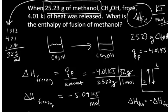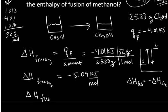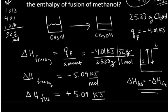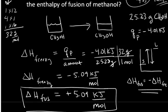I want the change in enthalpy of fusion, and that's just the opposite. So that's going to be negative times negative is positive 5.09 kilojoules per mole. So that's how someone would determine a change in enthalpy of melting, in this case, for methanol.